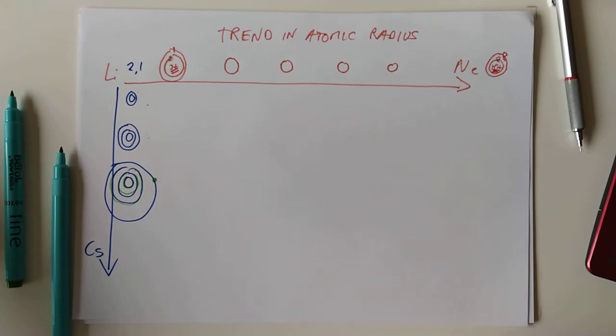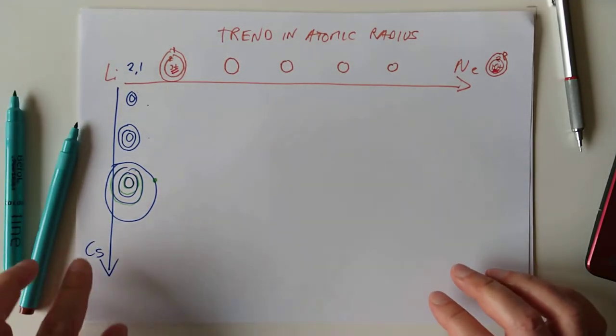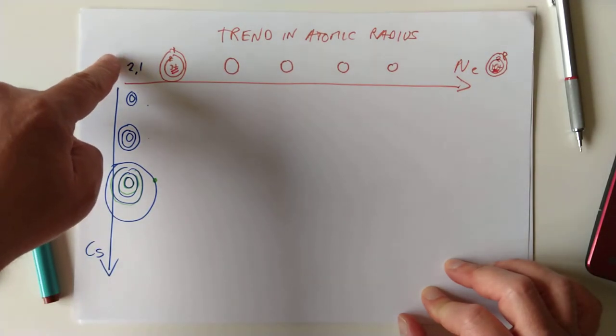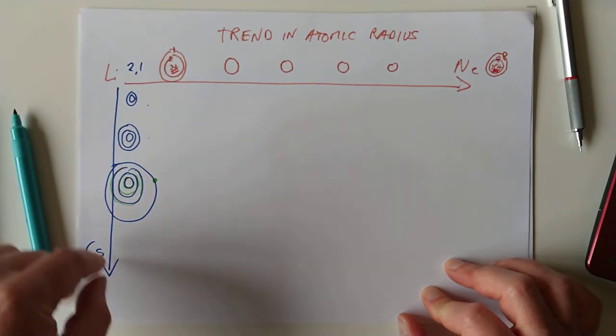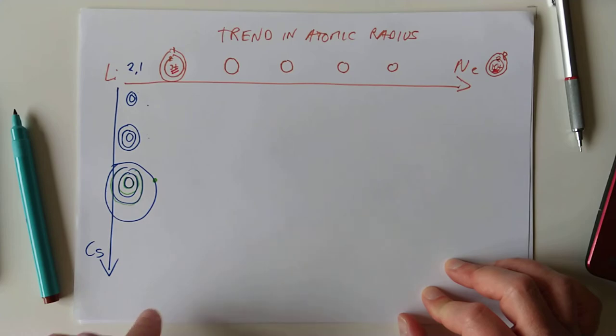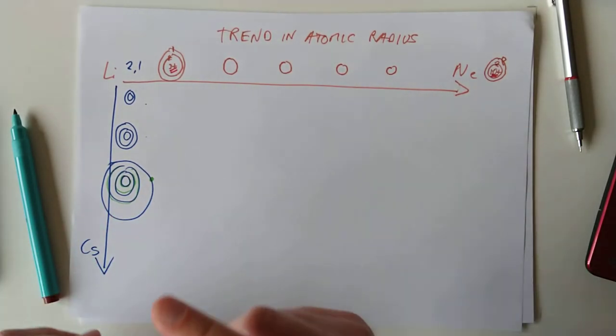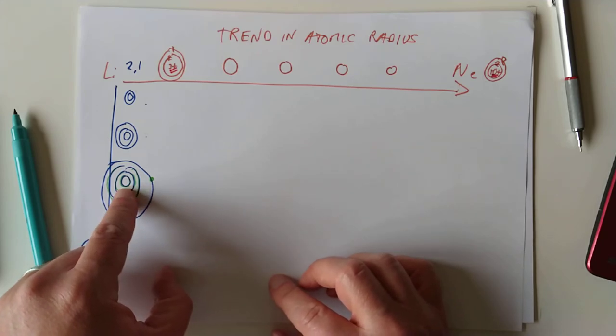I'll probably call the video at that then. So, learning outcome that we're tackling today is as you go down a period... Sorry, I do apologise. As you go down a group, then the atoms become considerably larger because the outer electron... There's one extra layer of electrons, and these intermediate layers act as a shield.